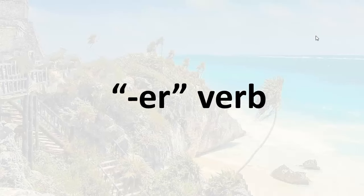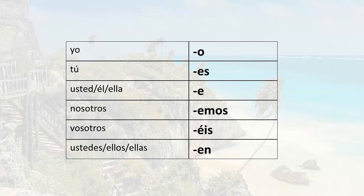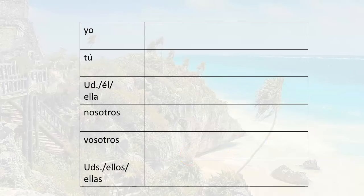Remember that vender is a regular ER verb. That means it follows the pattern for conjugating all regular ER verbs. All you have to do is remove the ER from the word vender, and then replace it with one of these endings to conjugate it. So let's go ahead and practice that.